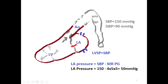Left atrial pressure equals left ventricular systolic pressure minus the mitral regurgitation pressure gradient. Using the Bernoulli equation, if we know Vmax of MR, we can calculate the pressure gradient: MR Vmax is 5 m/s, so pressure gradient = 4 × 5² = 100 mmHg. Systolic blood pressure is 150, so left atrial pressure = 150 − 100 = 50 mmHg, which is very high.